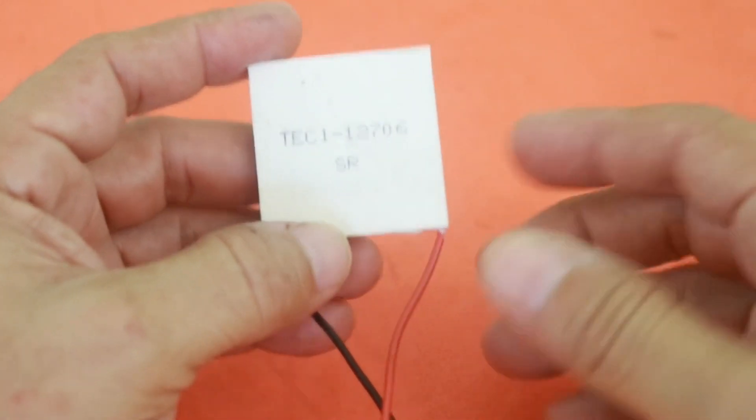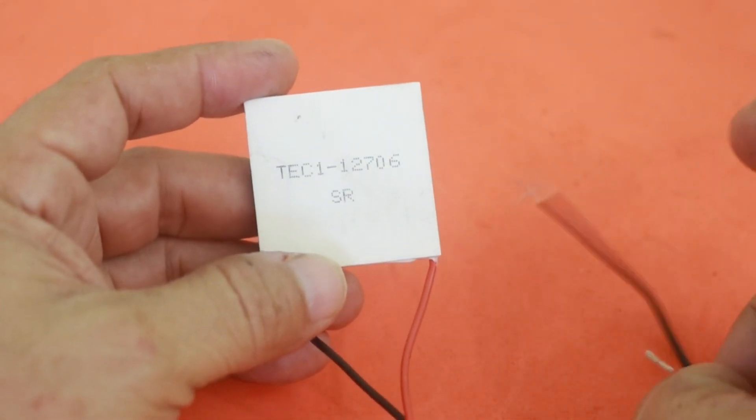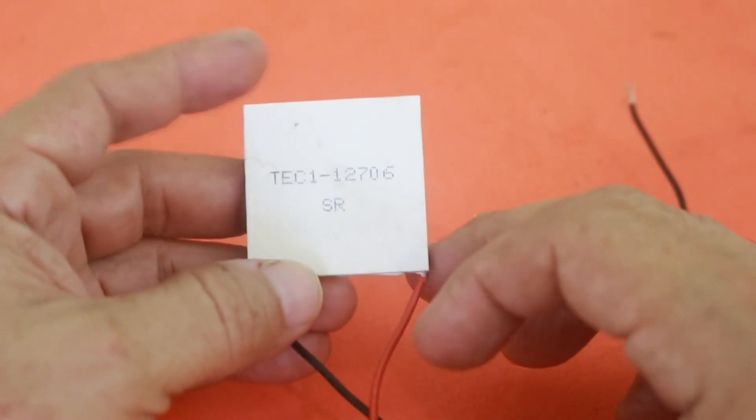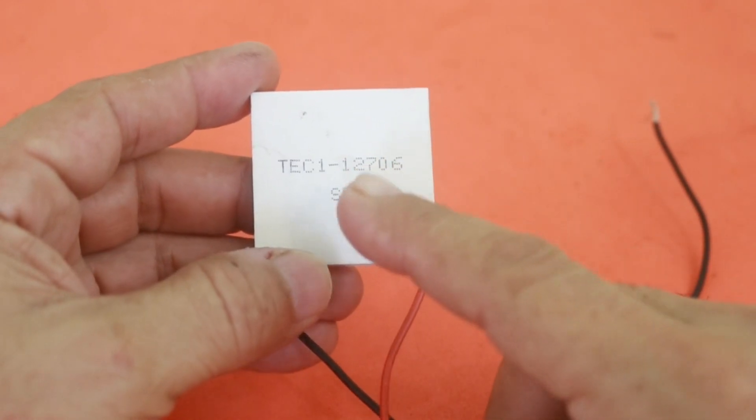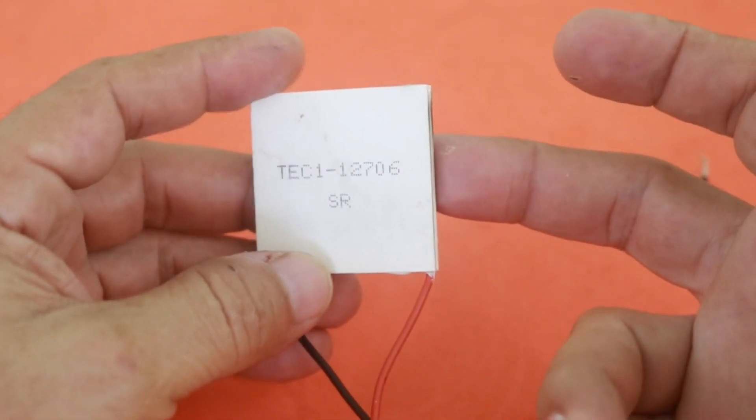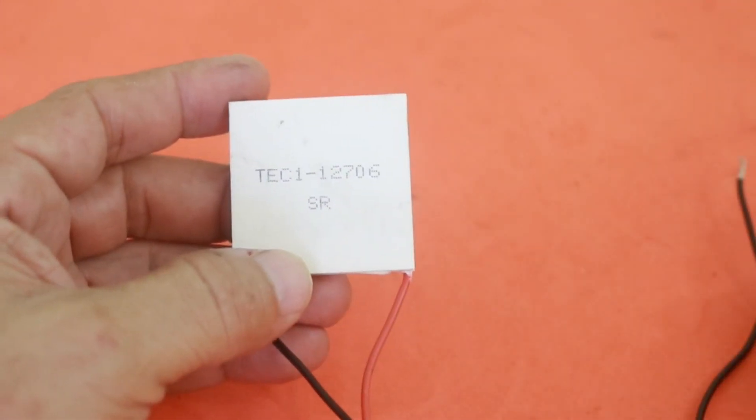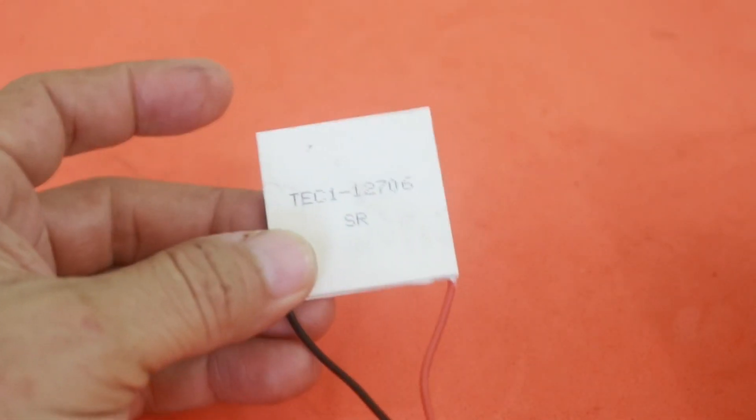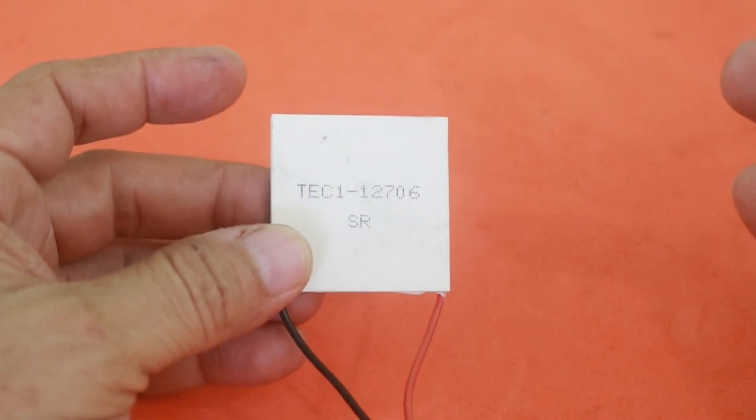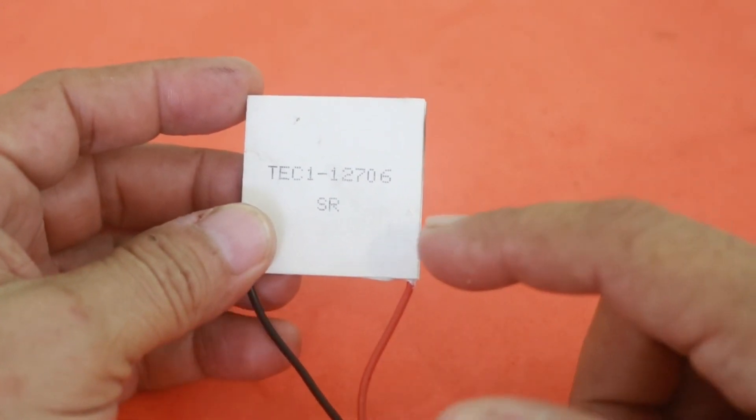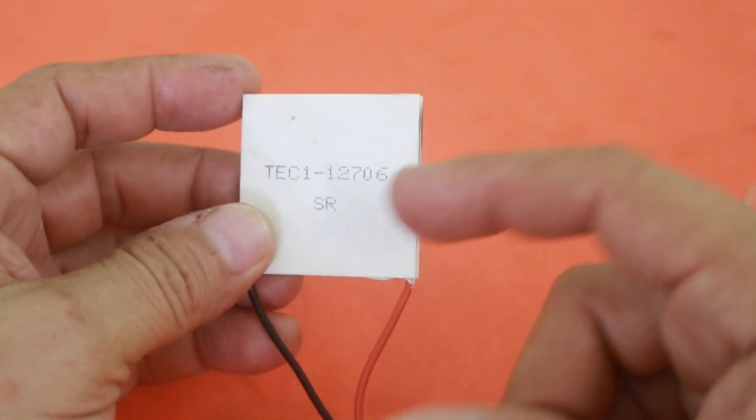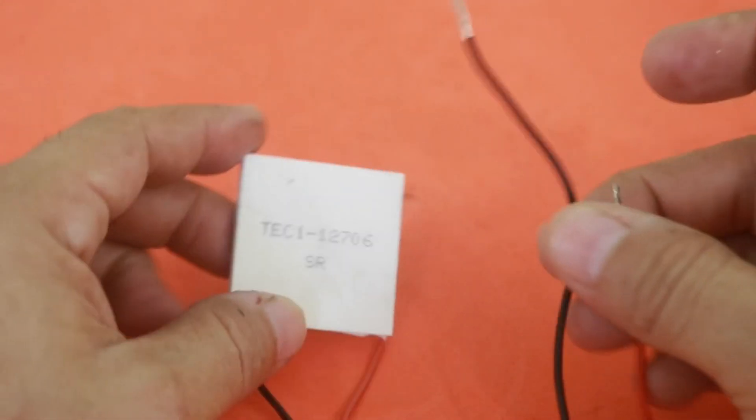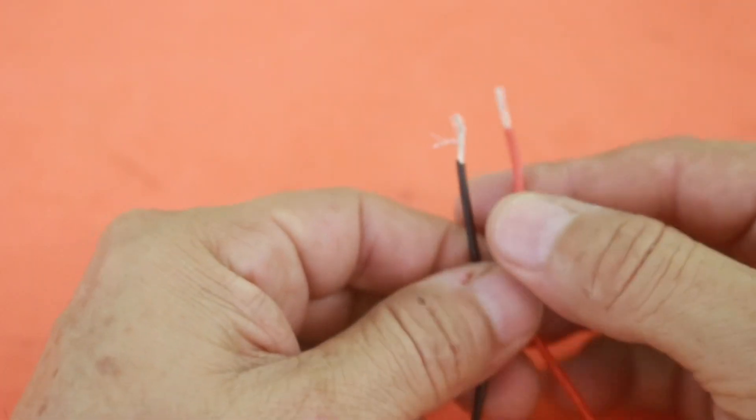If you don't know these cells well, they work in the following way. You apply a current to the terminals of the cells and one side gets hot and the other gets cold. That is, you convert the electric energy into thermal energy. And they also work in reverse. If you make a temperature difference, you apply heat to one side and the other is cold, then at the terminals you will obtain electric energy.